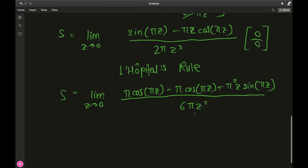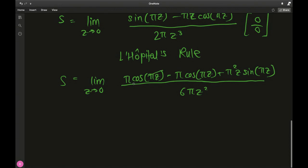Divided by the derivative of the denominator is 6πz squared, 3 times 2 is 6. Now these terms will cancel out. We have limit as z goes to 0 of π squared z sine of πz over 6πz squared.